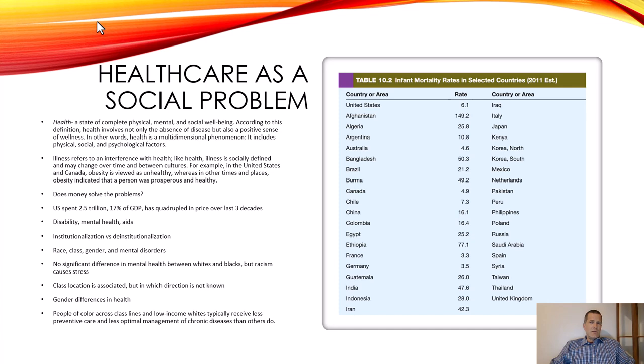We could make it so people have better physical, mental, and social well-being, but we choose not to. There are many more people we could help if we put more money into medicine or made access more accessible. We could help people's minds along with their bodies and not stigmatize them for what they're feeling. We can improve social well-being by improving economic well-being, education, job prestige, and access to better healthcare.